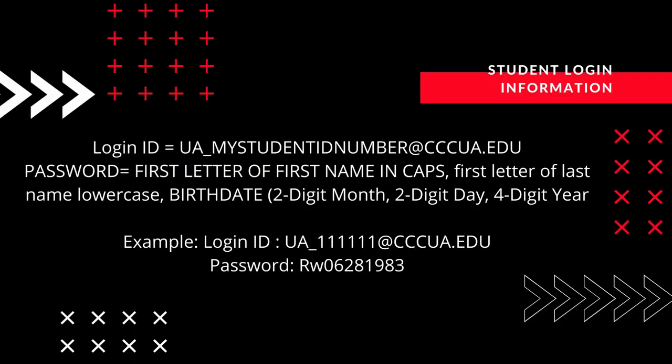Your login ID is going to be ua underscore your student ID number at cccua.edu. Your password is going to be the first letter of your first name in all capitals, the first letter of your last name lowercase, and your two digit month, two digit day, four digit year birth date.